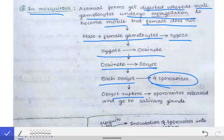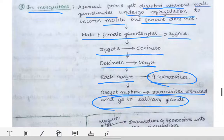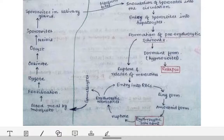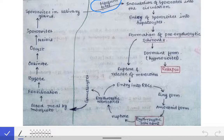When the oocyst ruptures, the sporozoites are released and travel to the salivary glands of the mosquito. When that mosquito bites a human, the sporozoites from the salivary glands enter the human body, completing the cycle. This is the whole life cycle of Plasmodium. A pictorial depiction of the life cycle shows the mosquito biting and inoculating sporozoites into the circulation.